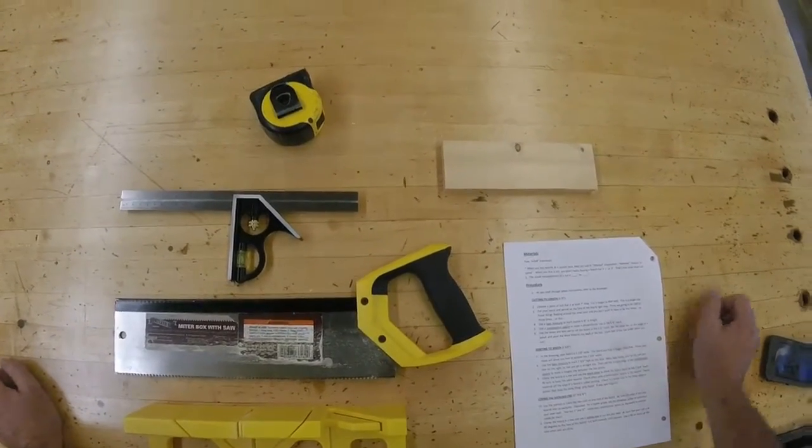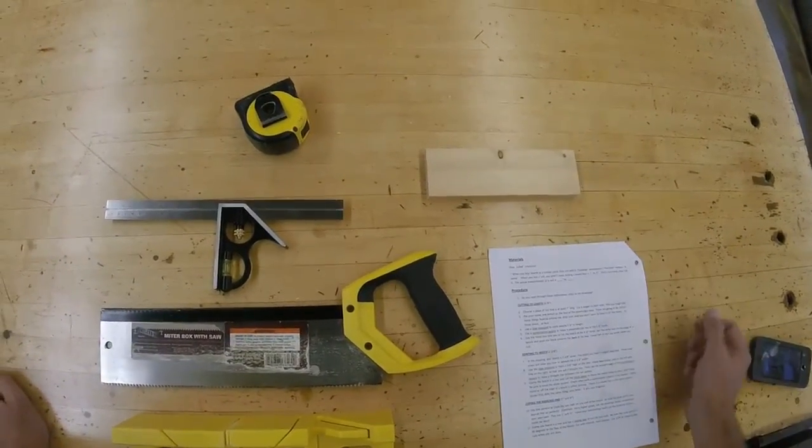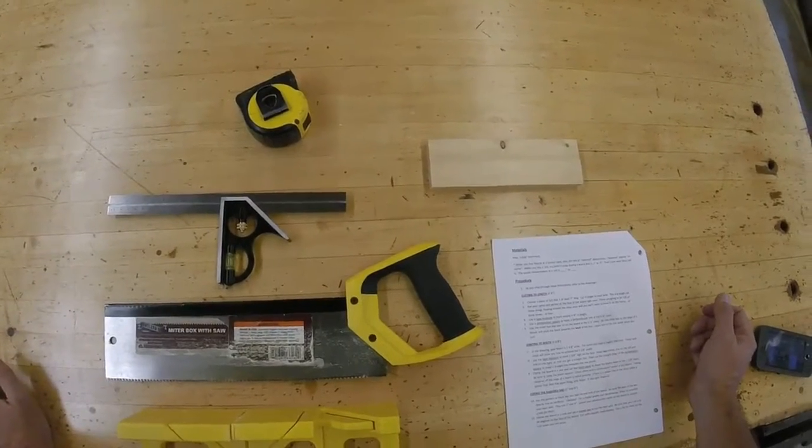Step 2: Choose a piece of 1x3 that is at least 7 inches long. Cut it longer to start with. This is called a rough cut.